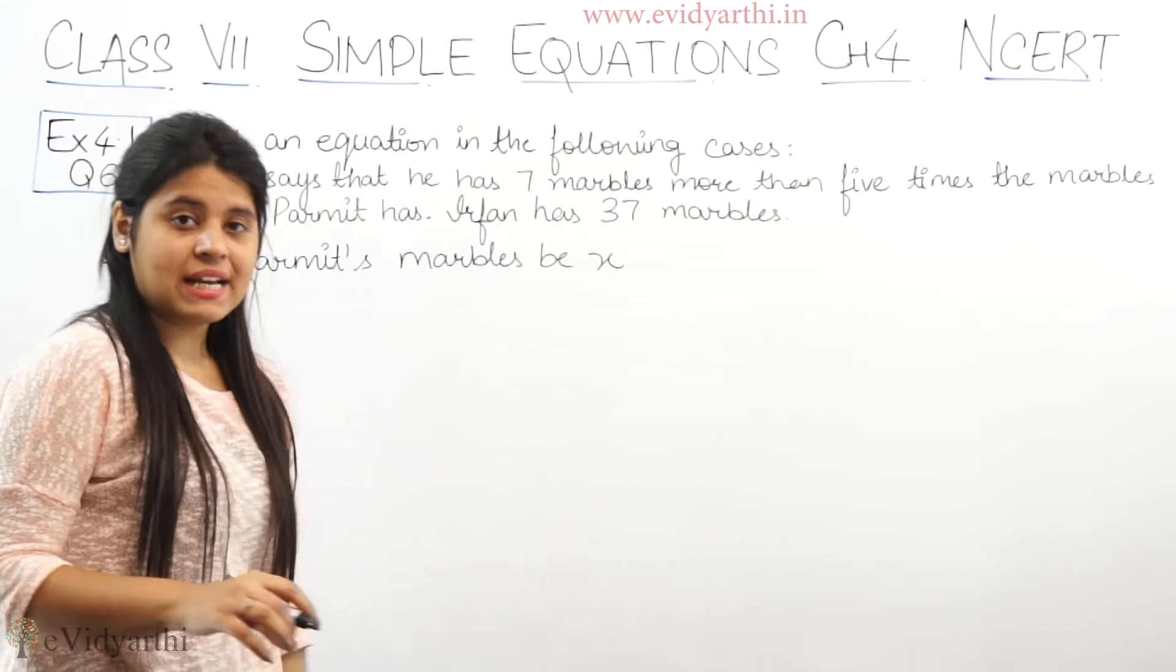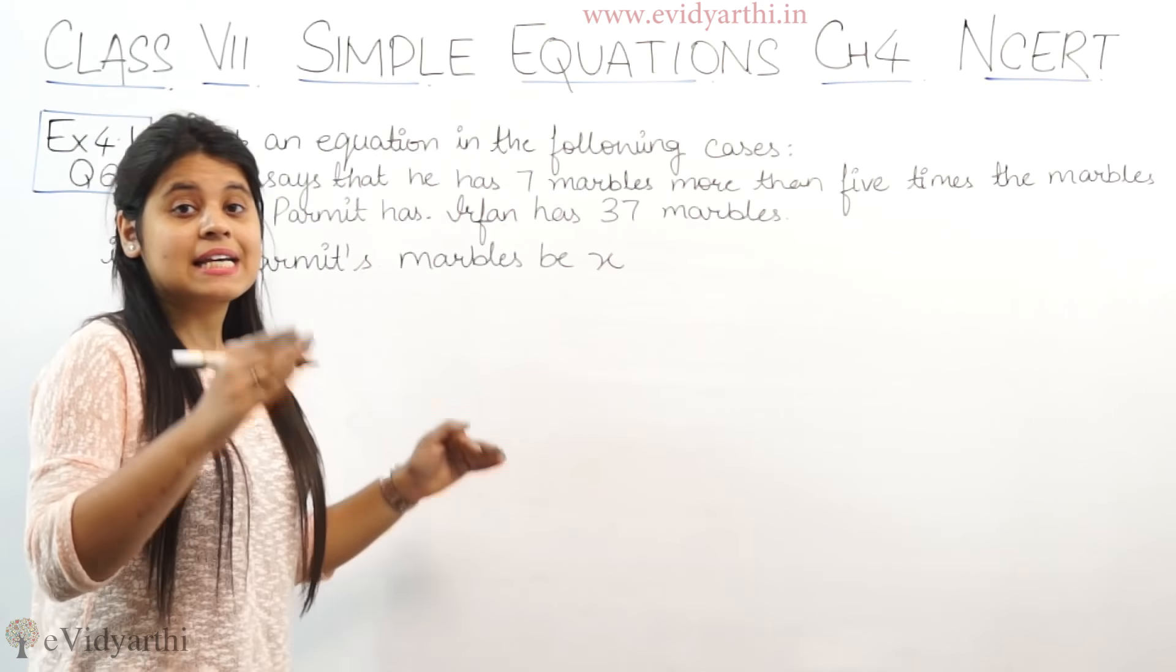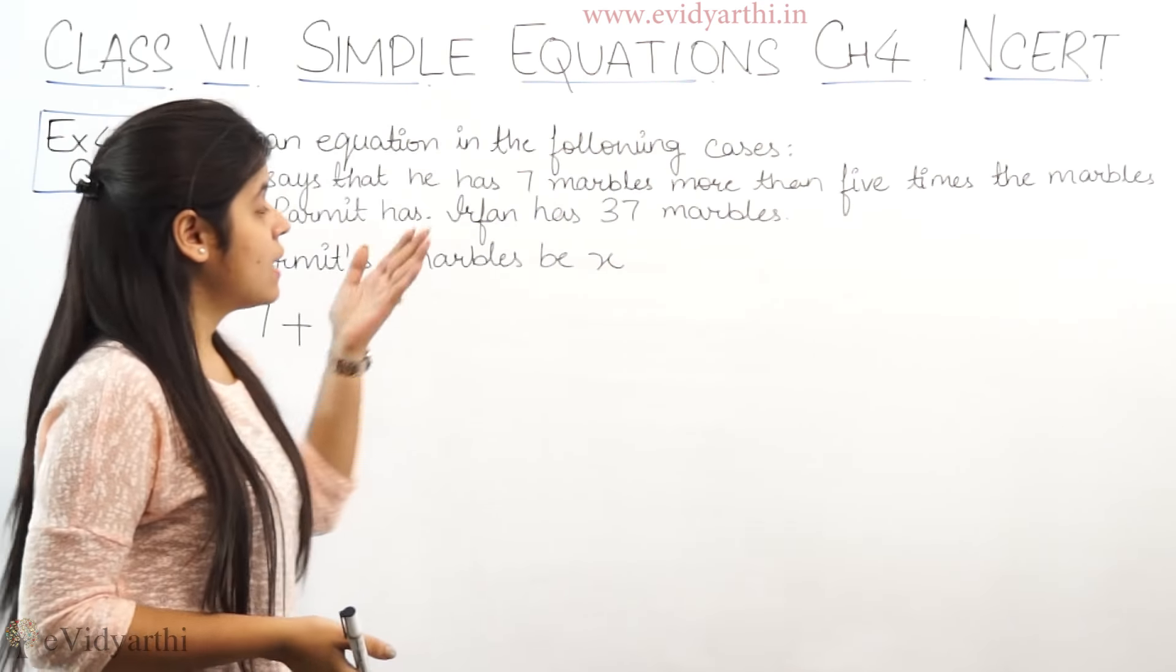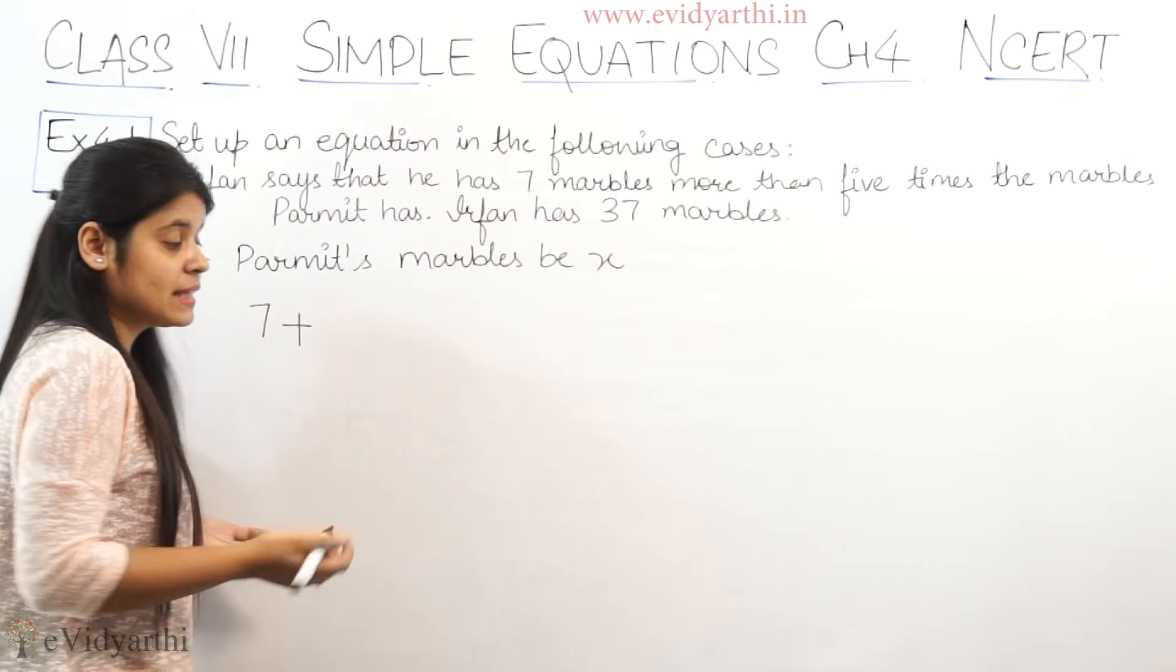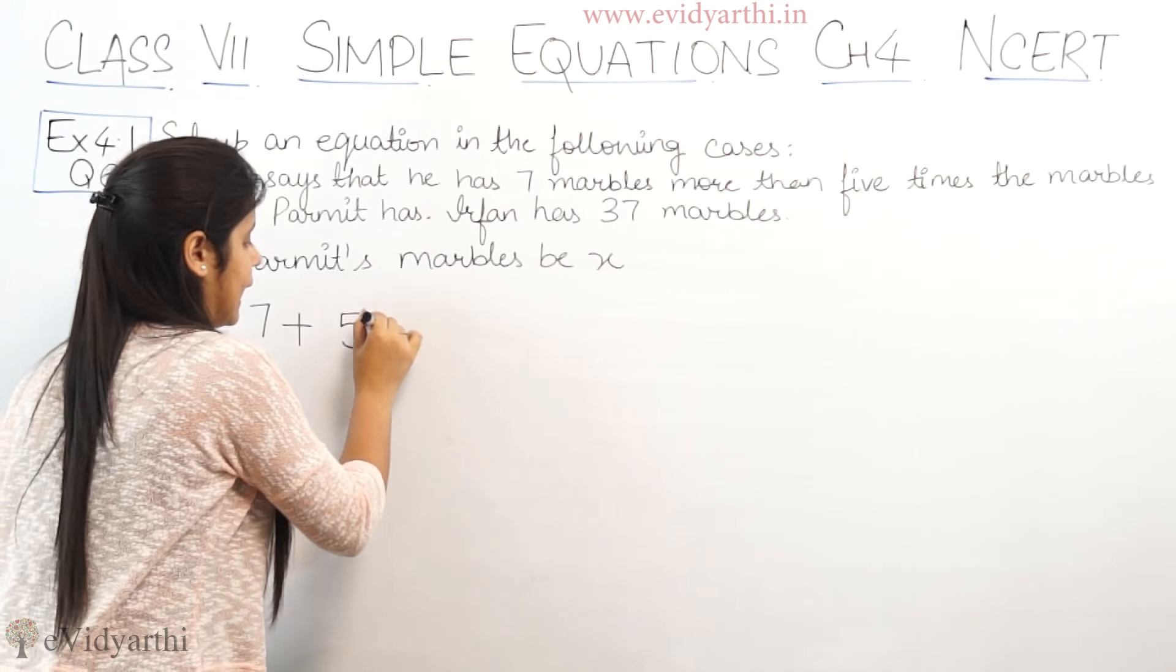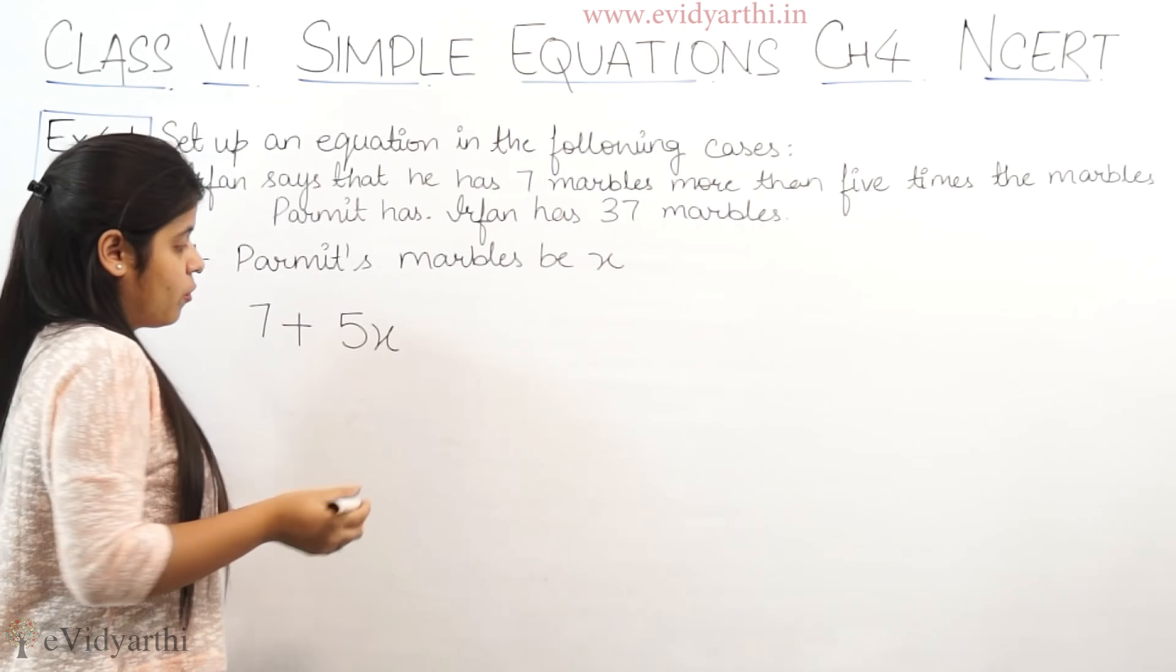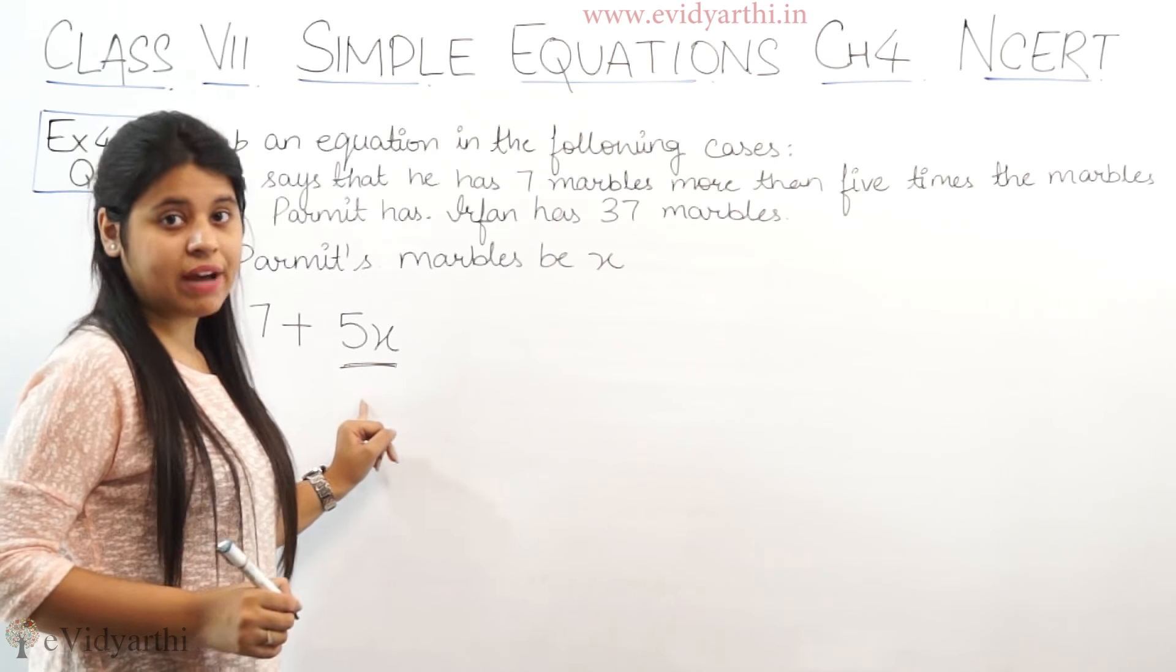Now we have let that Parmit's marbles are x. That means x number of marbles. So now we have to go back to this equation. Irfan says that he has 7 marbles, 7 more than, more than means plus, 5 times the marbles Parmit has. Kis se zyada? 5 times kis ka? x ka. Because here 5 times the marbles Parmit has. So when we have x liya hai, toh yeh 5x ho jayega.